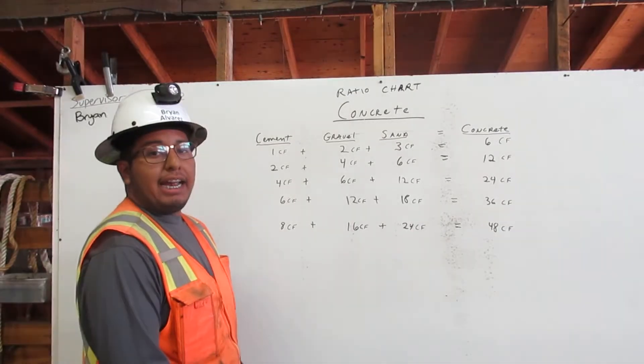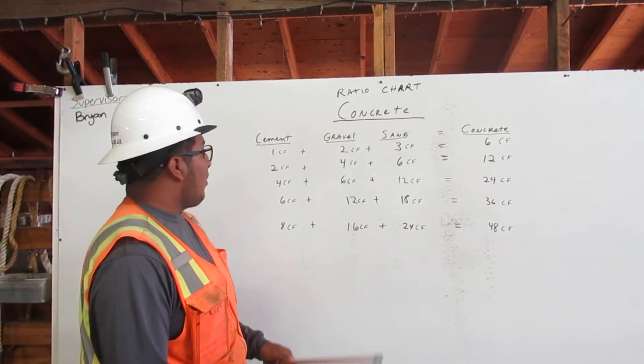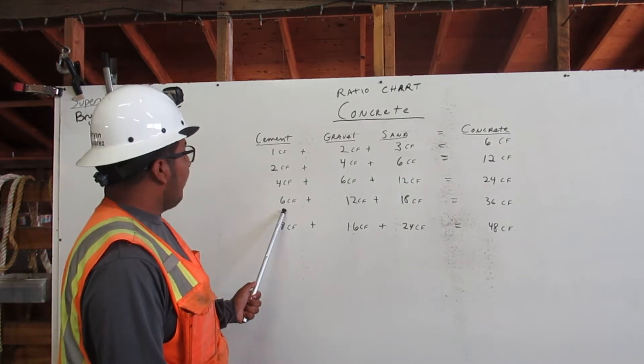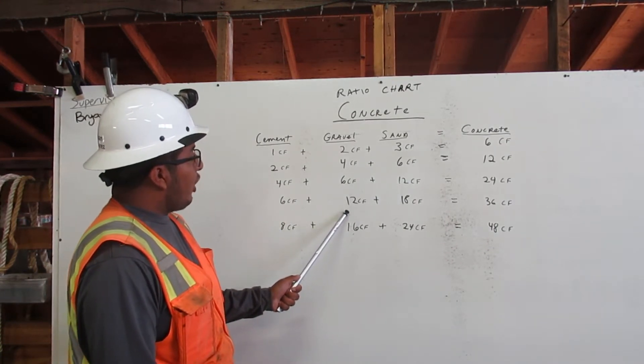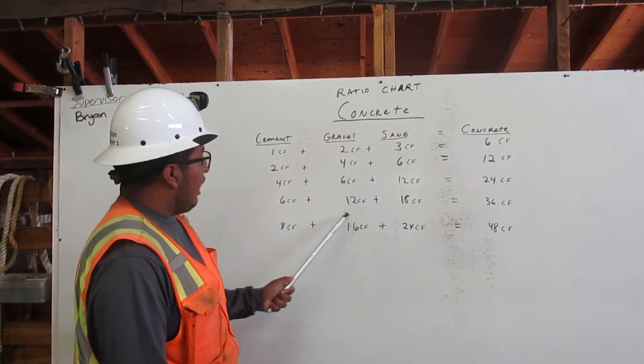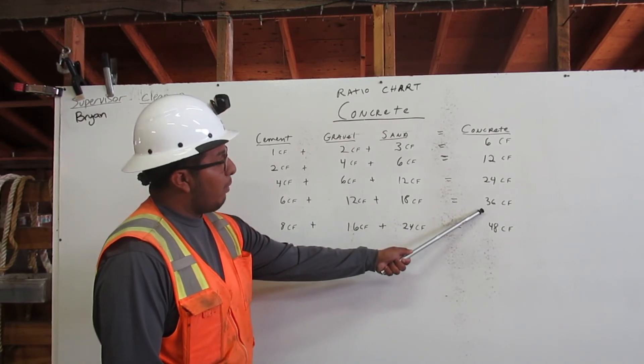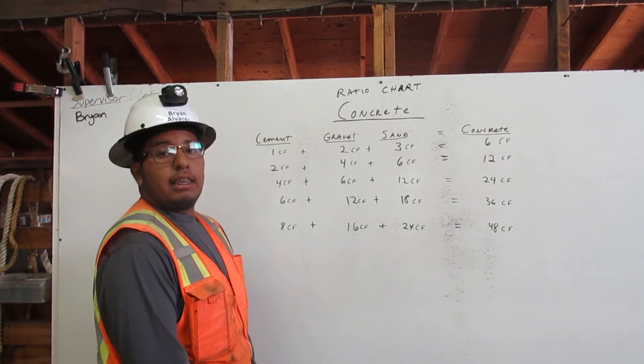Now if I am on a job site and I need 36 cubic feet of concrete, I am going to get six cubic feet of cement, 12 cubic feet of gravel, and 18 cubic feet of sand. I am going to add and mix all these together and I am going to get 36 cubic feet of concrete. Thank you.